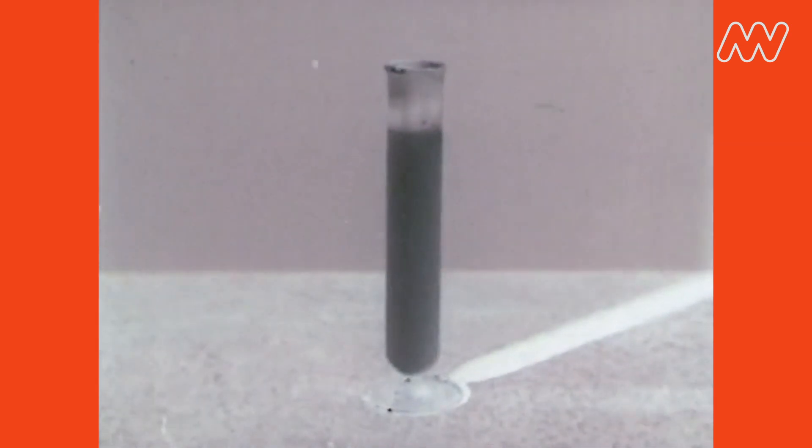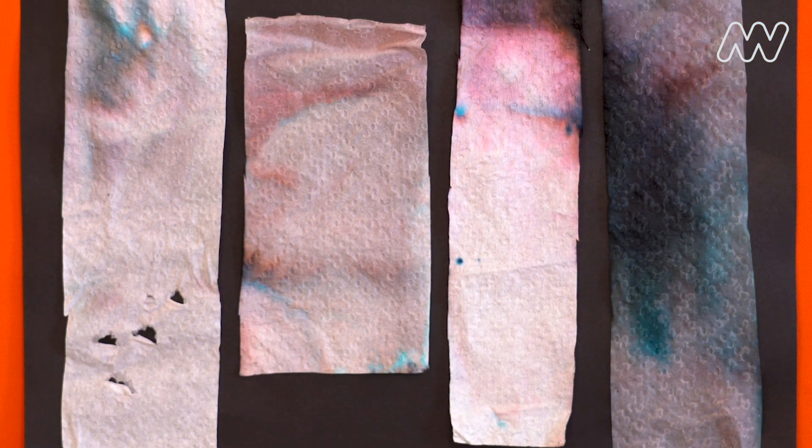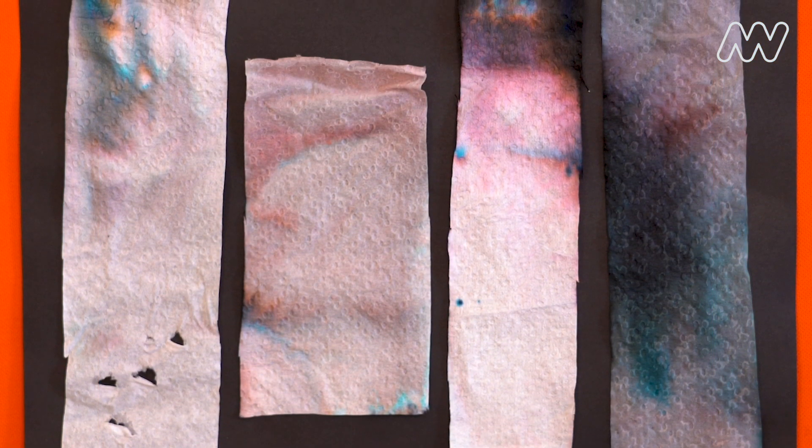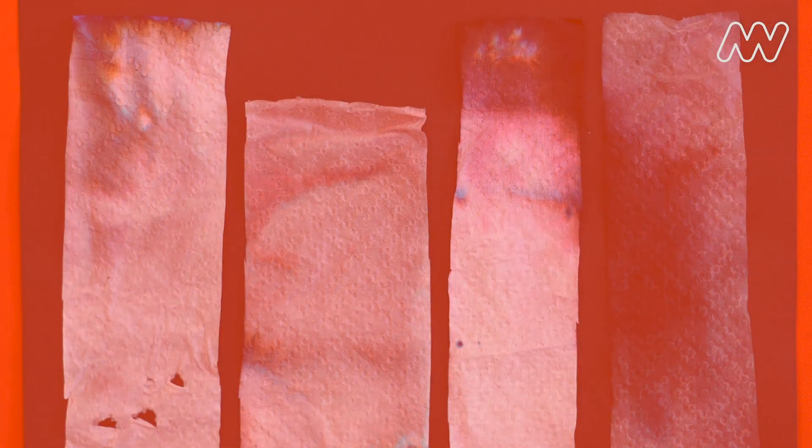The color black is actually made up of a combination of other colors. Those colors have different properties. Some are heavier than others and different sizes. This means they travel up the paper at different rates, allowing us to see all the colors that make up the black of your marker.